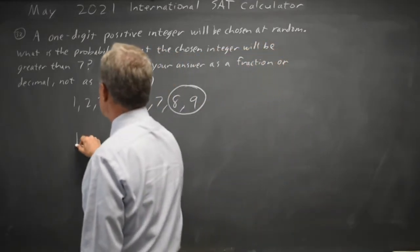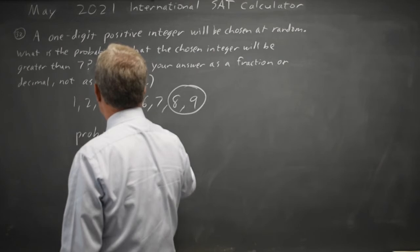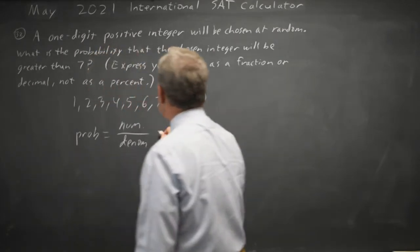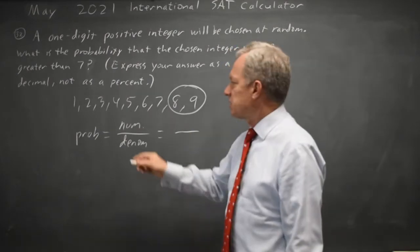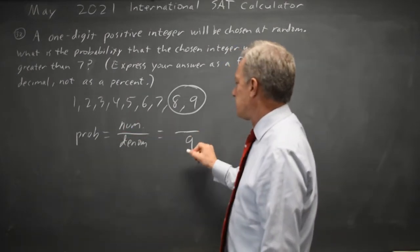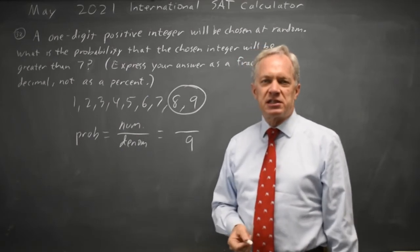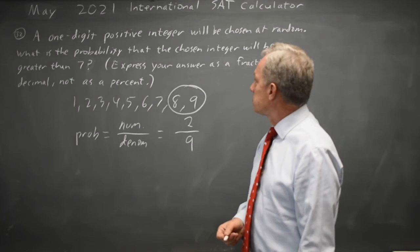The probability is a numerator over a denominator, where the denominator is the total number of items that might be chosen. In this case, 1 through 9 is 9 of them. And the numerator is, of those items, which ones count as a success? In this case, that's only 8 or 9, which is 2 of the 9 items.